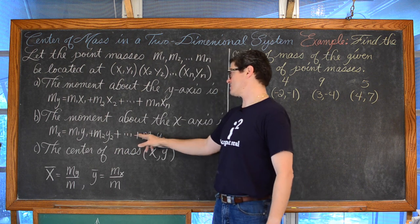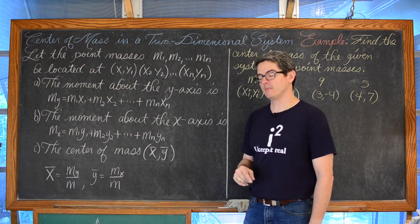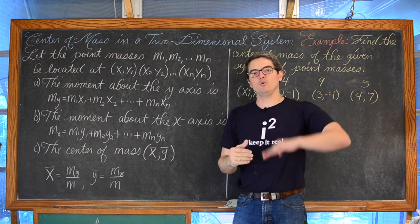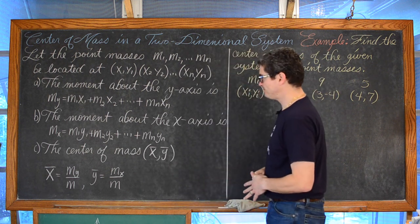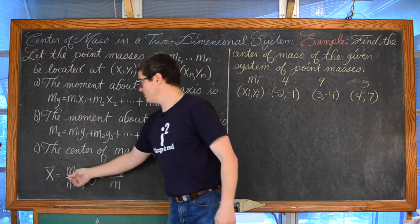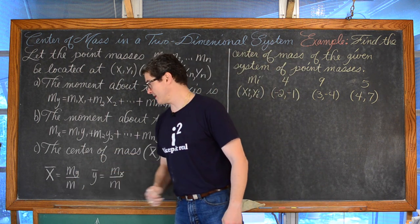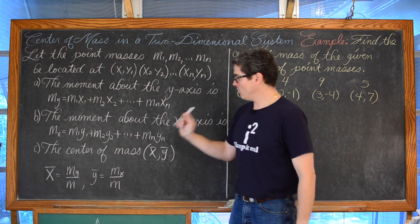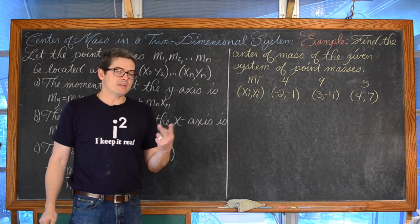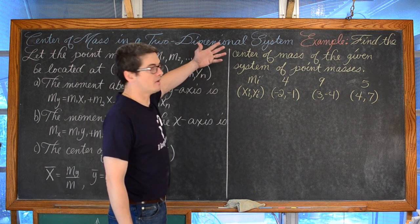The moment about the x-axis m sub x is equal to m sub 1 times y sub 1 plus m sub 2 times y sub 2, and so on up to m sub n times y sub n. The y-coordinate is your up-and-down movement — it is your distance from the x-axis. The center of mass, therefore, is the point x-bar y-bar, where x-bar is m sub y divided by m — the moment about the y-axis divided by the total mass — and y-bar is m sub x divided by m. Think of it as just two one-dimensional problems combined in this two-dimensional system.